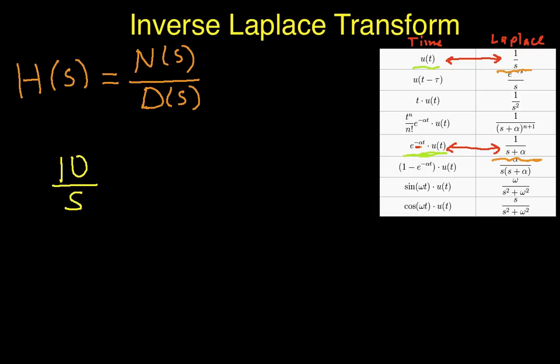And so, I look at this and I say 10 over s. I go over to my table and ask, is there a 10 over s? Well, there's a 1 over s. That looks sort of promising. So, how do I get this 10 over s to include a 1 over s? Well, I can say that this is 10 times 1 over s.